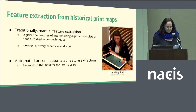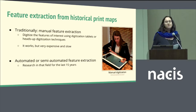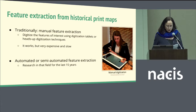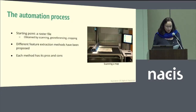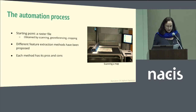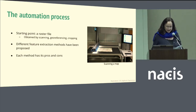For the last 15 years or so, some researchers have also been experimenting with automated or semi-automated feature extraction. The starting point of an automated workflow is always a raster image that is obtained by scanning the historical print map, georeferencing it, and cropping it. Different methods have been proposed, and each method has its pros and cons.